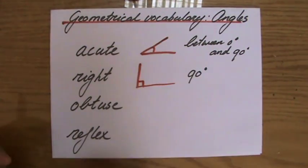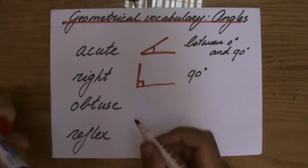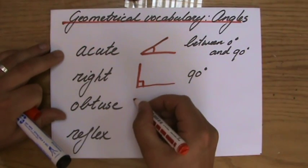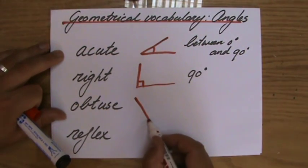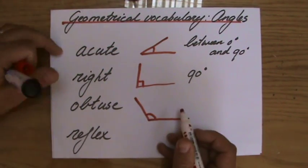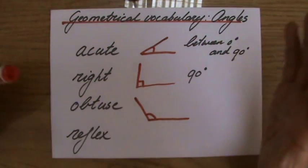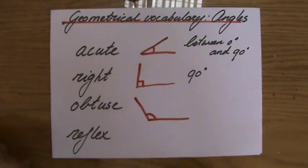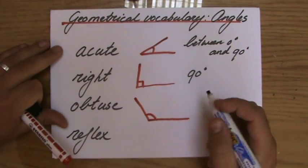Then we have obtuse angles. In the Netherlands we like to call them lazy angles. You understand why we call them lazy angles, because they are fairly relaxed, hanging around. An obtuse angle is an angle between 90 degrees and the straight line which is 180 degrees.